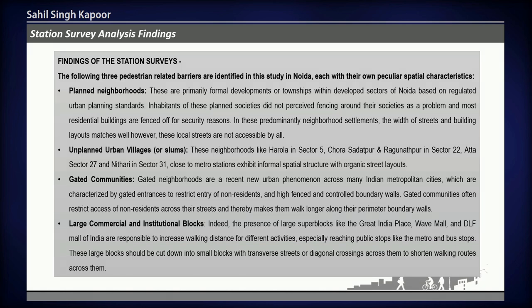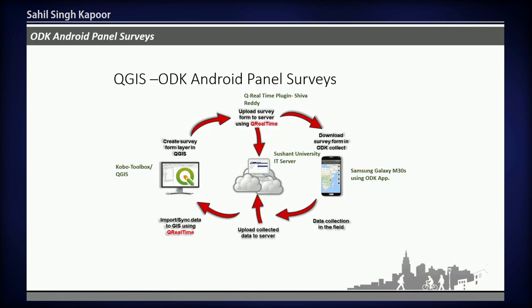Lastly, we have large commercial and institutional blocks. Several sectors are just a single super block in Noida City, and there is no diagonal cut-across through the institutional or super blocks. So people are forced to walk along the boundary of the super blocks, which tremendously increases the actual walking distance beyond the perceived shortest route.